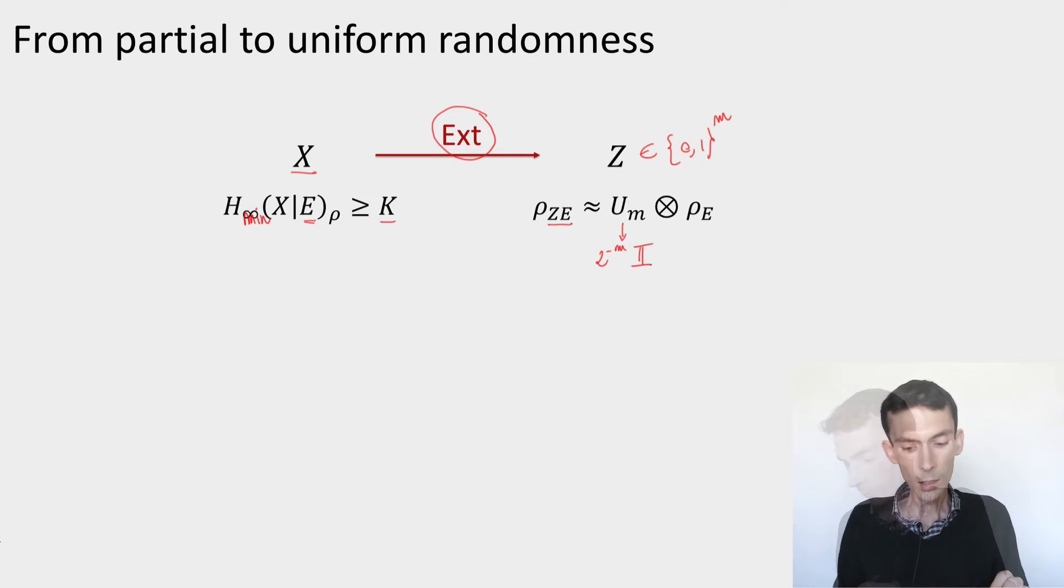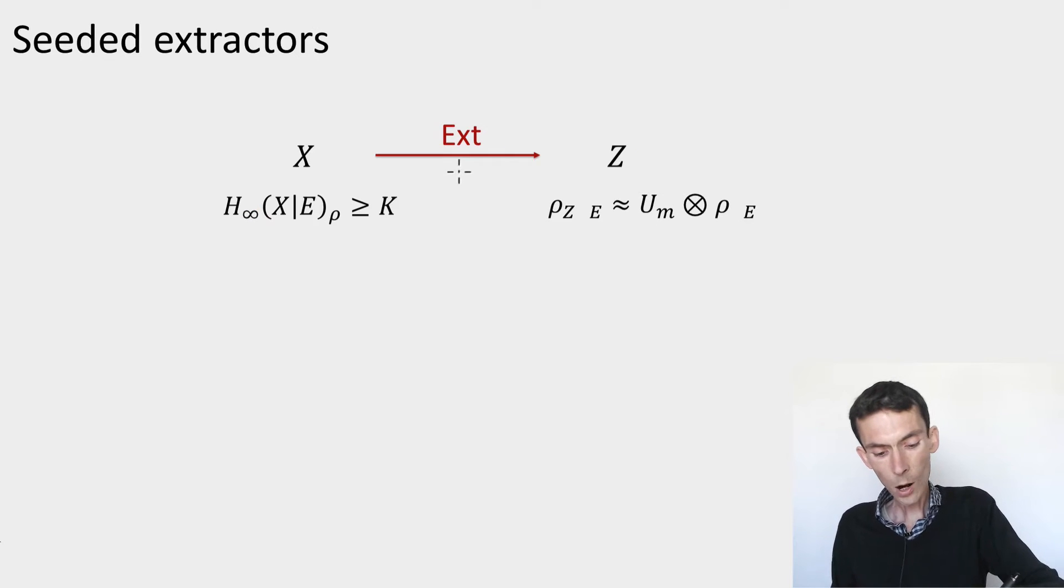So let's see the role of the seed. It's usually going to be called Y, and this will be a random variable which will be distributed in {0,1}^d. So we'll have d bits of seed, and this seed will always be uniformly random.